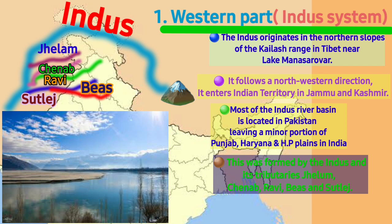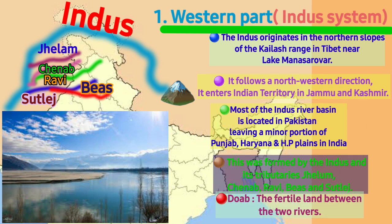The Western part has an important feature called Doab. Doab means the fertile land between two rivers — 'Do' means two and 'Ab' means river.